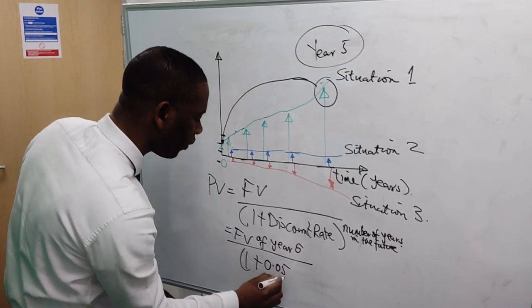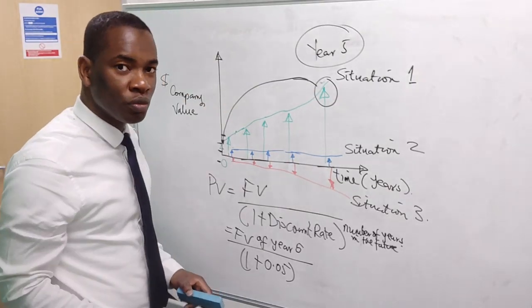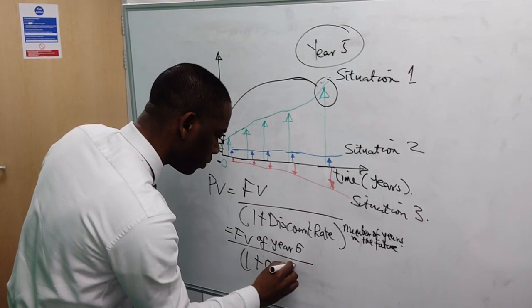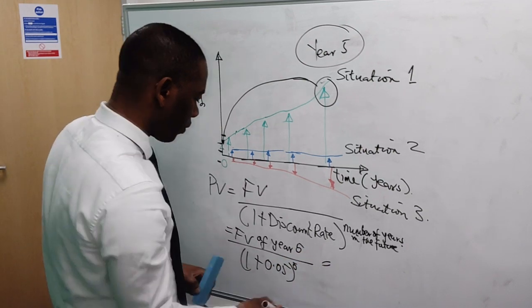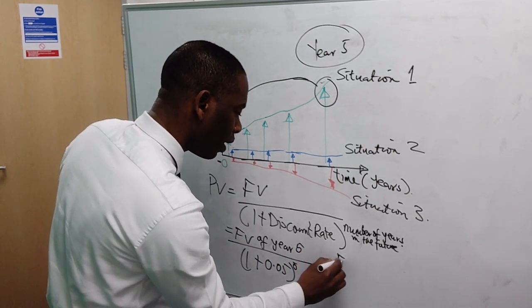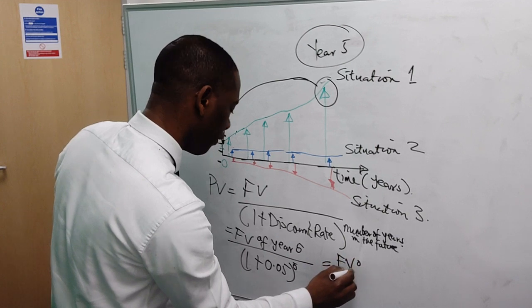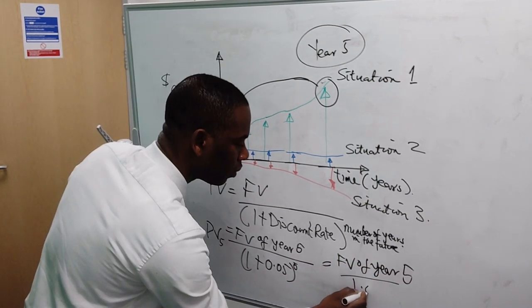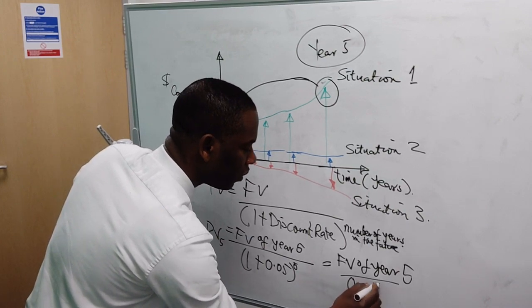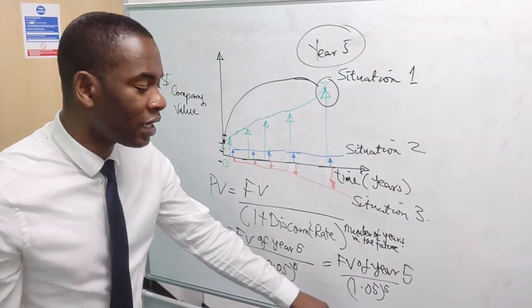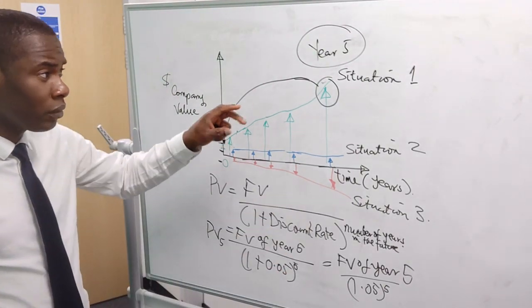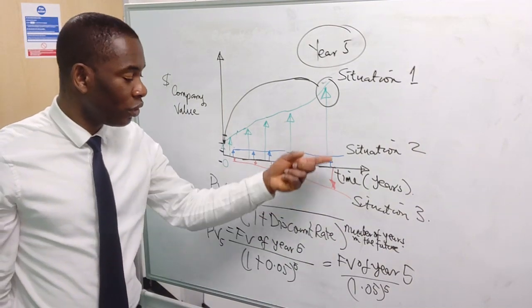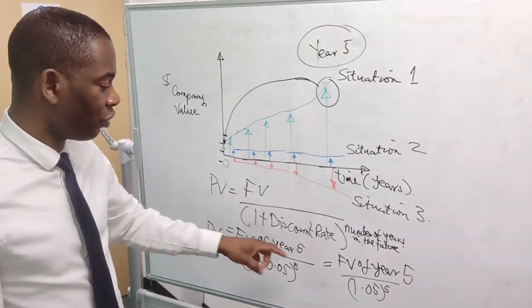Raised to the power of what you are looking into the future - so which is 5 years. That will give you FV of year 5 raised to the power of 5. So that is how you bring the future value of tomorrow down to today.